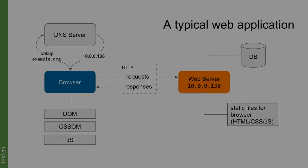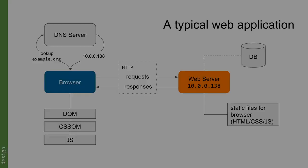When we talked about how the web works, we showed a diagram of a typical web application. The browser sends a request to a web server, going through a DNS server to translate URLs with human-readable names into IP addresses. This request is sent via HTTP to a web server, which sends a response back. If the response is a web page, the browser constructs the DOM — its internal representation of the HTML file — parsing all the tags into memory, and does something similar for CSS and JavaScript.